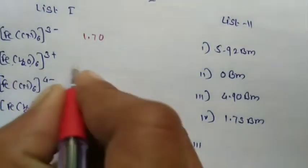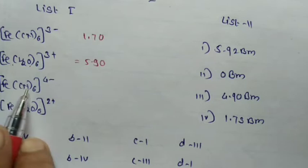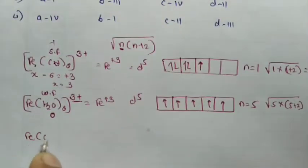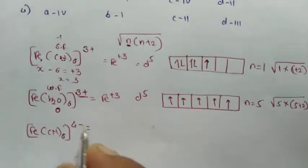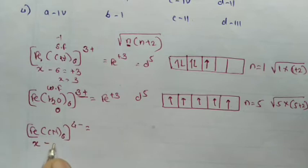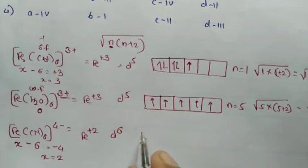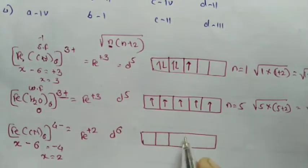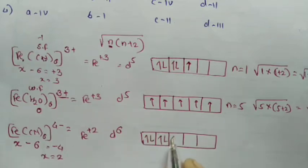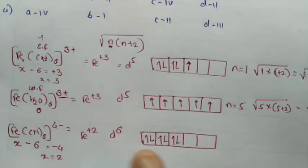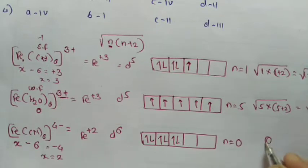Third complex: Fe(CN)₆⁴⁻. Fe is X, CN is minus 6, overall charge minus 4, so oxidation state of iron is plus 2. With plus 2 there are 6 electrons in the d orbit. CN is again a strong field ligand, so the 6 electrons fill up with pairing: 1, 2, 3, 4, 5, 6. There are no unpaired electrons, so the spin magnetic value of this complex is 0 BM.